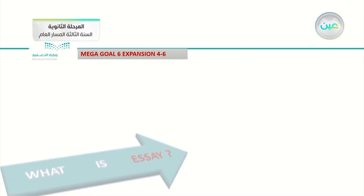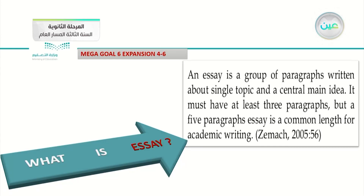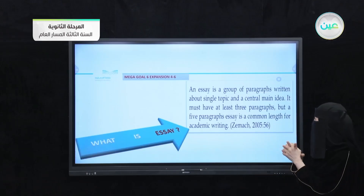On the next slide, we will talk about the essay as a whole, in general. What does an essay mean? An essay is a group of paragraphs written about a single topic and a central main idea. It must have at least three paragraphs — introduction, body, and conclusion. But a five-paragraph essay is a common length for academic writing. If you would like to write academically, you should structure your essay through five paragraphs: introduction, three body paragraphs, and conclusion.